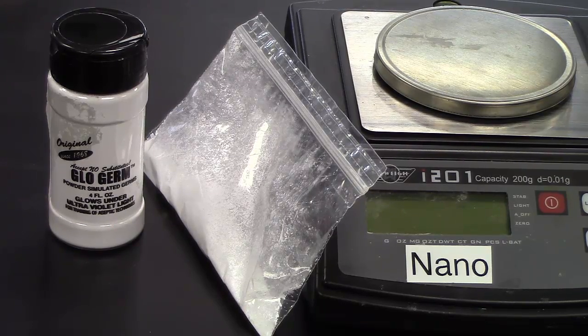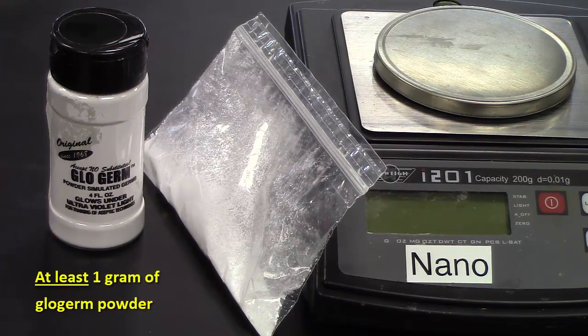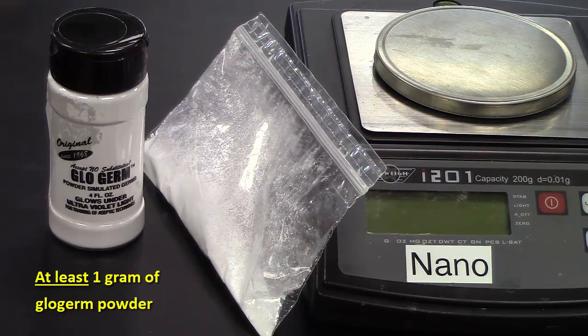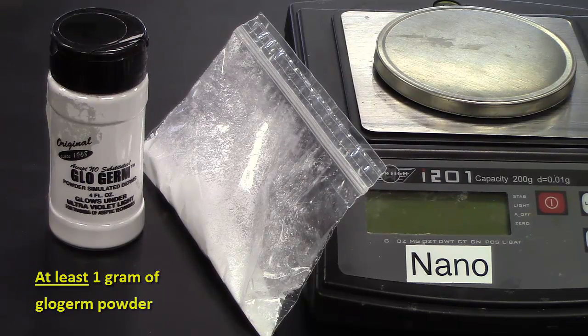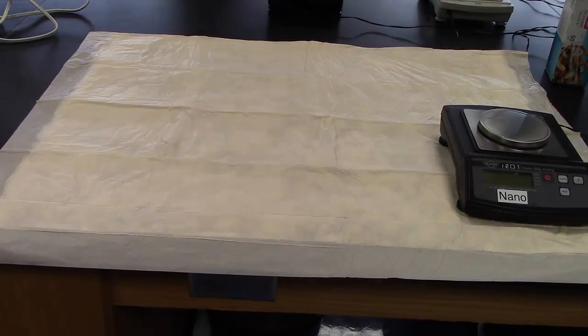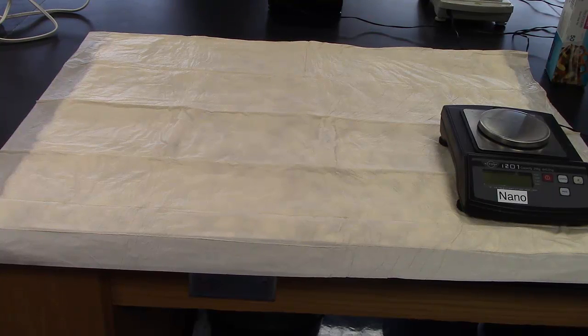Using a spatula or scoop, measure and pour at least one gram of the glow germ powder into a small plastic snack bag and seal it. Set up the bench top by placing an absorbent pad over the area you intend to work, then place the laboratory balance on the absorbent pad.